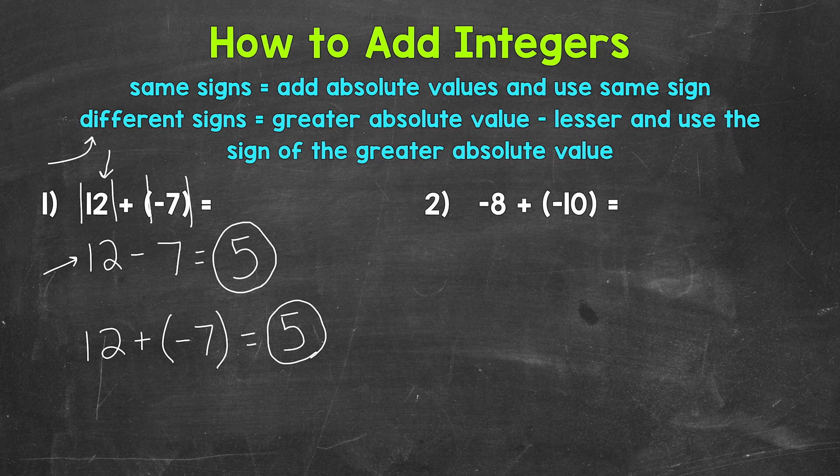So again, we started at a positive 12. Always think about where you are starting and where you are going from that starting point. So we are adding a negative 7, which is decreasing our 12 in value by 7, and we end up with 5.